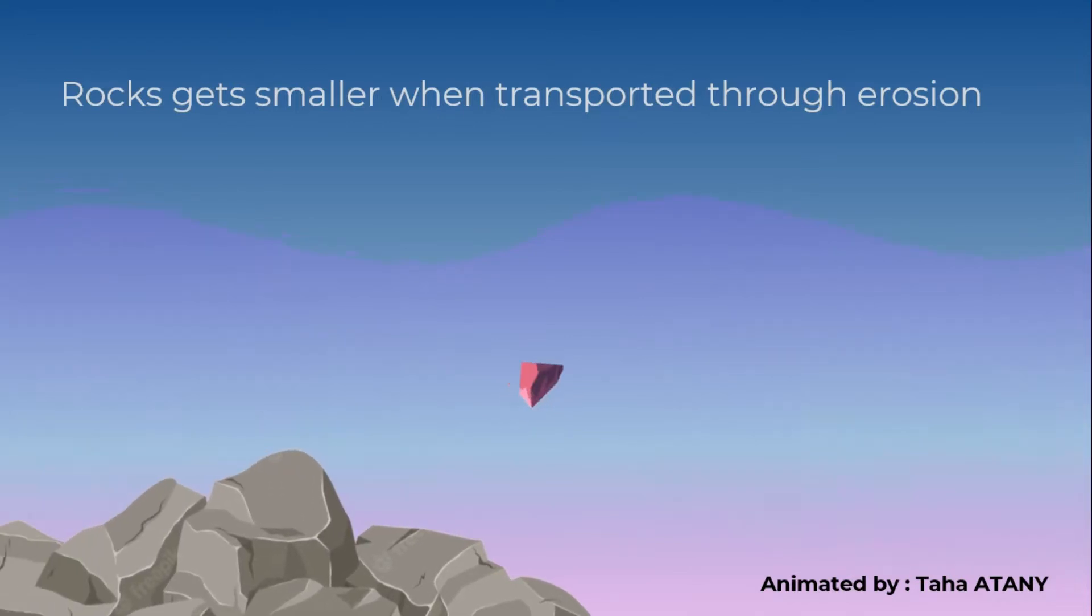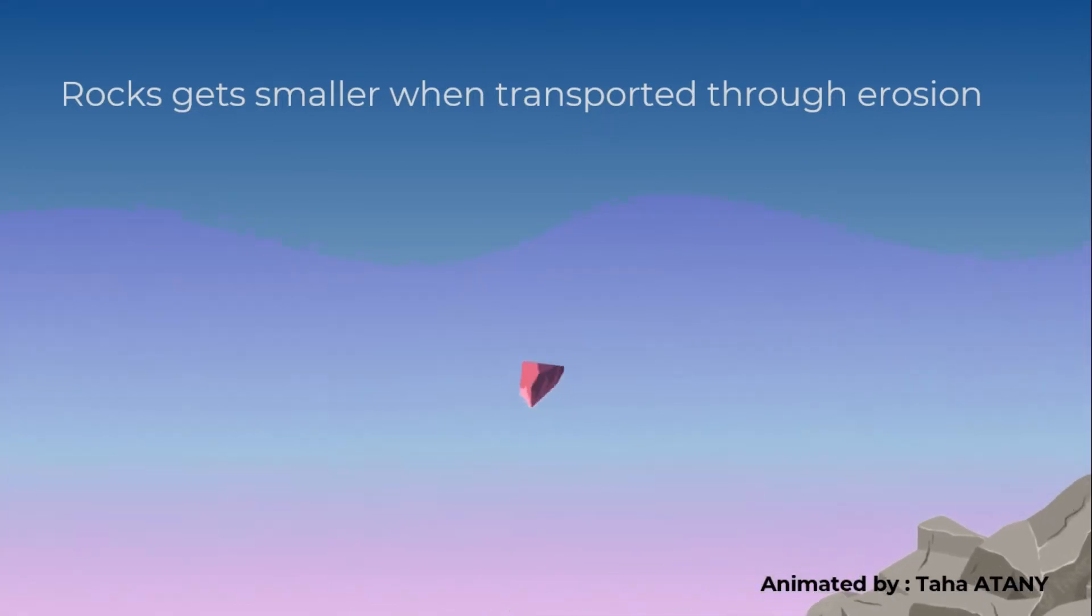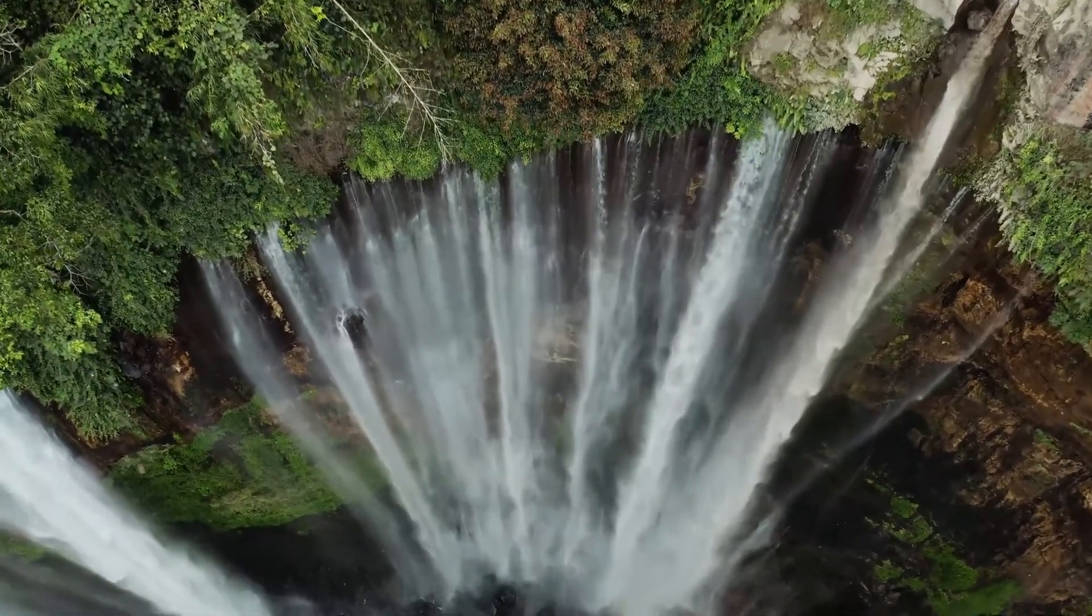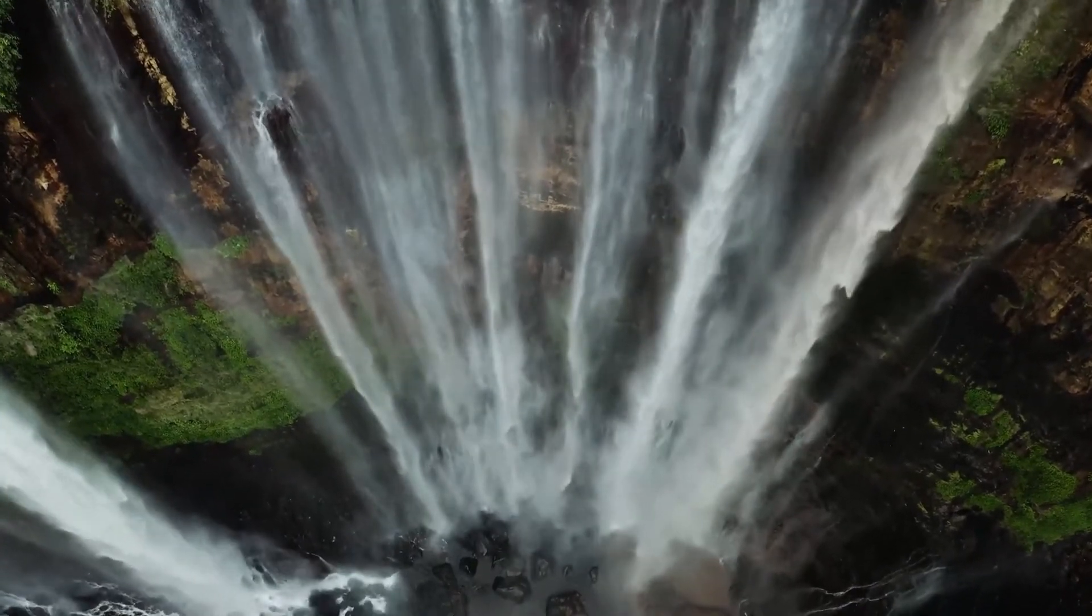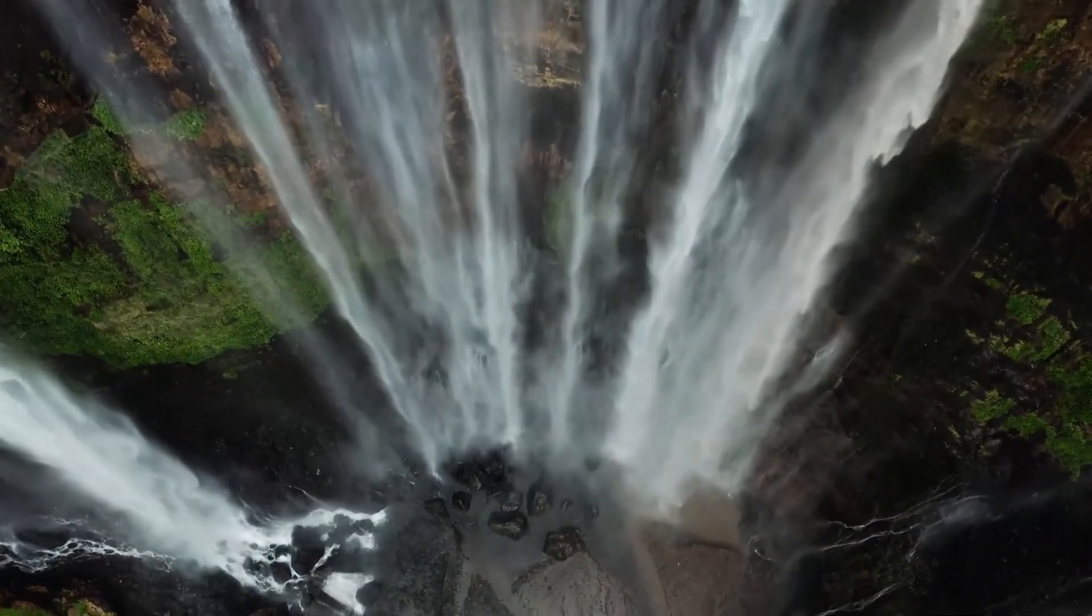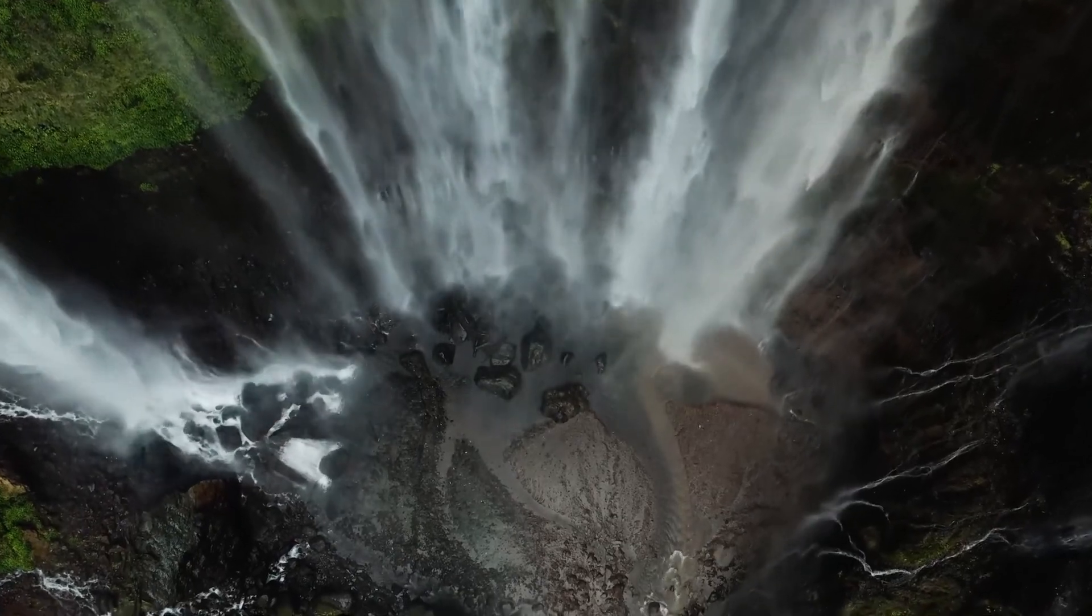While rocks are transported, they are decreasing in size. So the more they get exposed to erosion, the smaller they get. The size here could be an indicator of the duration of erosion. There are several erosion factors: it could be water, wind, or simply gravity. Once those elements are too small or the erosion factor weakens, they settle down.